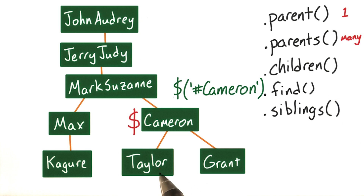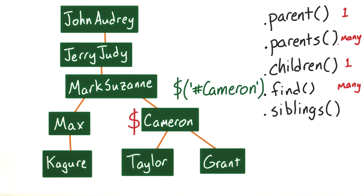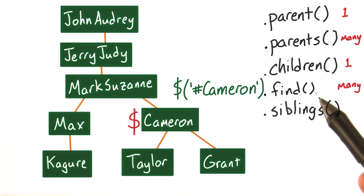.find goes down the DOM more than one level. Similar to .parent and .parents, jQuery provides a method that only traverses a single level deep in the tree, which is .children. If you want to go deeper, there's a separate method called .find, which will go many levels down in the DOM tree.